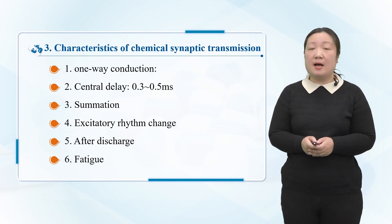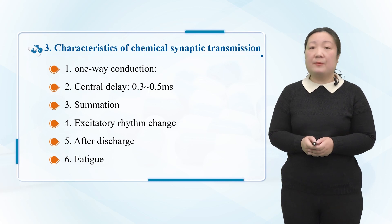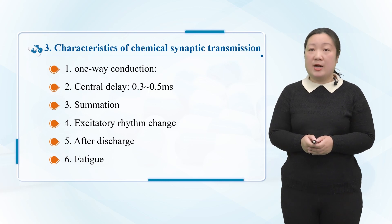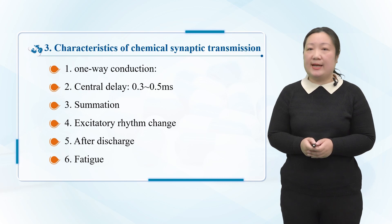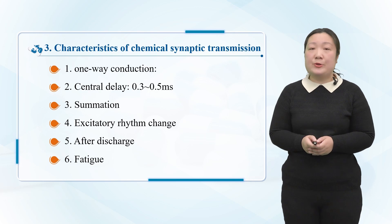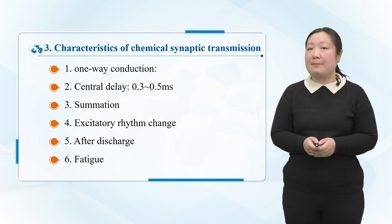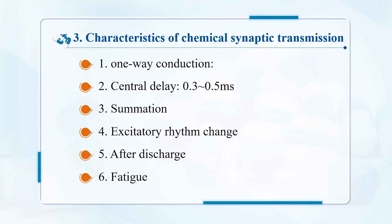The second characteristic is the summation effect. Only when a series of impulses are transmitted continually from the terminal of pre-synaptic neurons, or a row of impulses are transmitted from the terminals of many pre-synaptic neurons at the same time, and the released chemical transmitter accumulates to a certain amount, can the post-synaptic neurons be stimulated to produce an action potential. The third characteristic is synaptic delay.